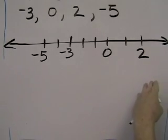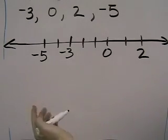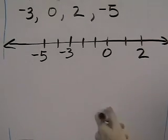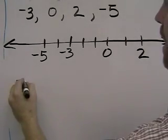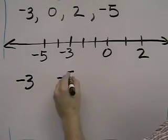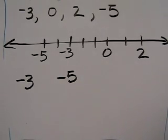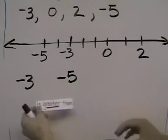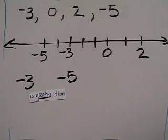Anything to the right on the number line is larger than anything on the left. For example, if I wanted to say negative 3 and negative 5, how do they compare? Well, negative 3 is greater than negative 5.